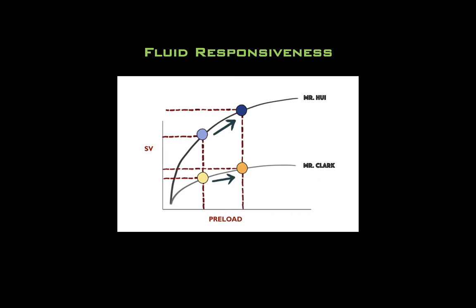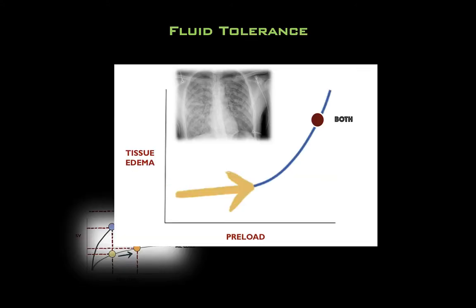Conversely, even though Mr. Hui has decent EF and may handle the preload — in other words he may be volume responsive — he may third space his volume quickly given his low oncotic pressure, and this may also result in significant tissue edema. Therefore, he may also not be fluid tolerant. One of these patients is volume responsive, but neither are volume tolerant. The answer to your complicated clinical question regarding volume resuscitation isn't straightforward, and the ultrasound probe isn't necessarily going to give you the magic key. There's no replacing due diligence in the practice of clinical medicine. What ultrasound can give you, however, is some additional data points to help guide your clinical decision.